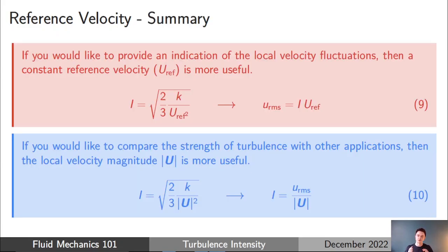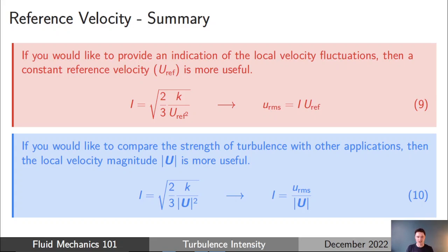To summarize the two approaches: if you'd like to indicate what the local velocity fluctuations are likely to be, use a constant reference velocity — you can directly multiply the turbulence intensity by that fixed reference velocity to get the root mean square of fluctuations. On the other hand, if you want to compare the local strength of turbulence with other applications, plot turbulence intensity based on the local velocity magnitude instead. In many scenarios it's worthwhile using both approaches and pulling out the detail most useful from each.